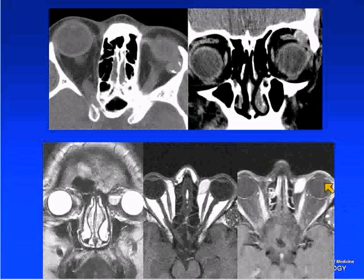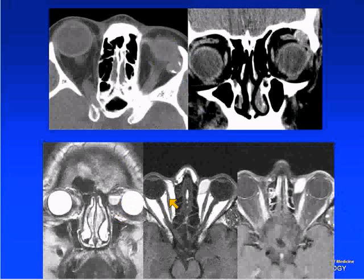This is a typical dermoid. They typically occur in the superolateral region of the orbit. They can calcify and have bony scalloping, typically at the frontozygomatic region. On MR, they may have fluid-fat levels and are typically hyperintense on T1-weighted images. It's important to remember they can occur in non-typical locations within the orbital region, including the medial canthal or medial portion.